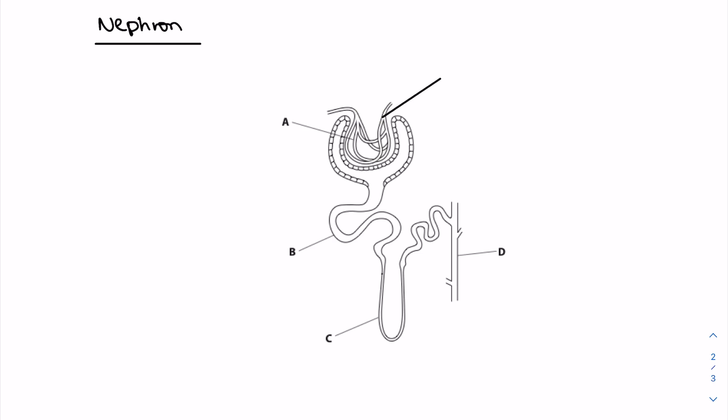Here's that nephron which you really do need to label. So the blood vessel which enters the nephron is known as the glomerulus. The first part of the nephron is called the Bowman's capsule, and remember between these two places is where ultrafiltration takes place. Part B we're going to call the proximal convoluted tubule.